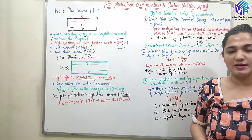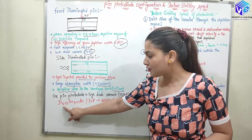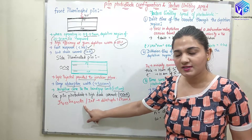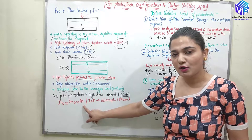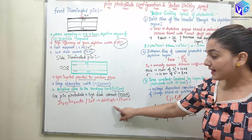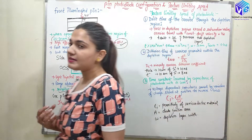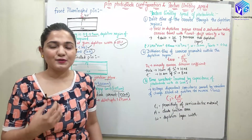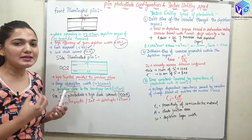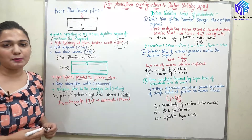We can use Indium 0.53 Gallium 0.47 Arsenide, which is a III-V alloy type of photodiode, or we can use Indium Phosphide to detect wavelengths up to 1.67 micrometers. If we increase the wavelength, the energy of the optical signal is less, so we need a very sensitive photodetector. These are very good photodetector options.